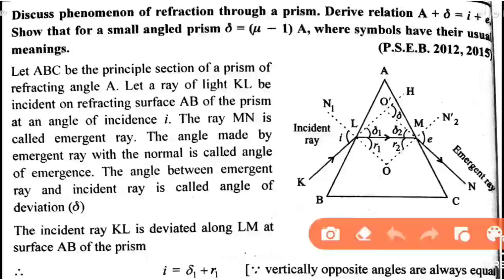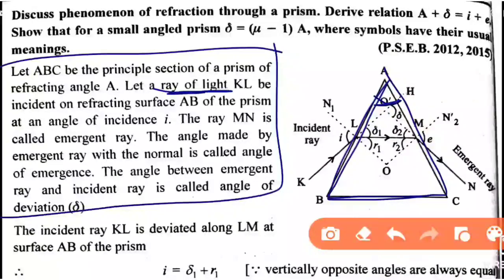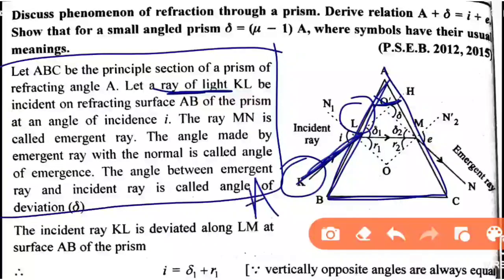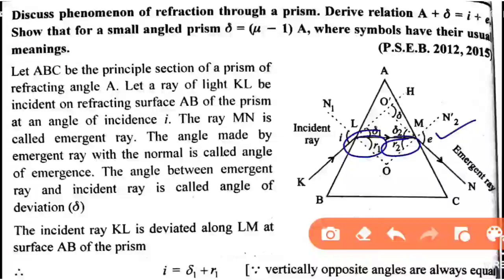First, we will cover the theory. We consider a prism having refractive index mu and having an angle A. We take an incident ray. The incident ray hits surface AB, refracts, and the refracted ray is called the emergent ray. The angle made by the emergent ray is called the angle of emergence.